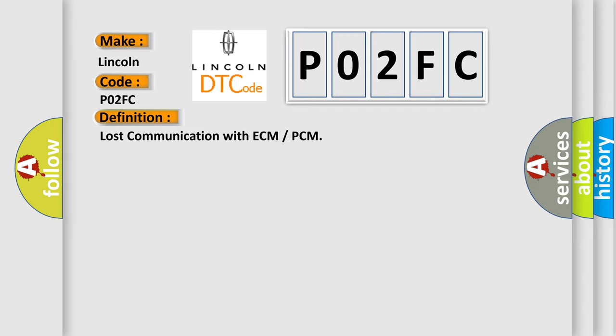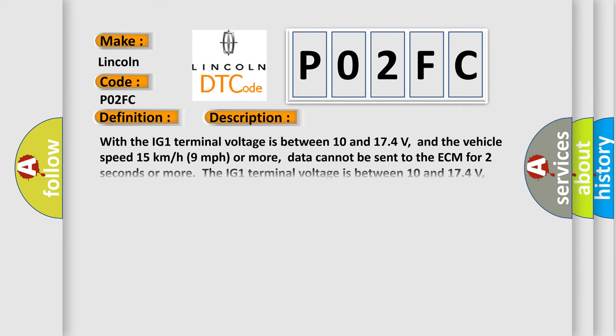And now this is a short description of this DTC code. With the IG-1 terminal voltage between 10 and 17.4 volts, and the vehicle speed 15 kilometers per hour (9 miles per hour) or more, data cannot be sent to the ECM for 2 seconds or more.